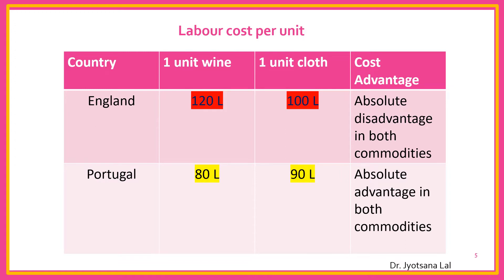So in this situation you can ask how international trade is possible — it seems not possible, because in England both commodities will be expensive and in Portugal both commodities are less expensive. But according to Ricardo, in this situation also international trade between these two countries is possible and both countries will have maximum benefit from this international trade.